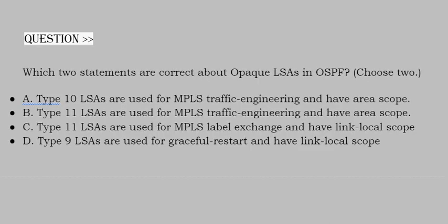Question: Which two statements are correct about OPAQUE LSAs in OSPF? Choose two options. Option A: Type 10 LSAs are used for MPLS traffic engineering and have area scope. Option B: Type 11 LSAs are used for MPLS traffic engineering and have area scope. Option C: Type 11 LSAs are used for MPLS label exchange and have link local scope. Option D: Type 9 LSAs are used for graceful restart and have link local scope. Correct answer is option A and option D.